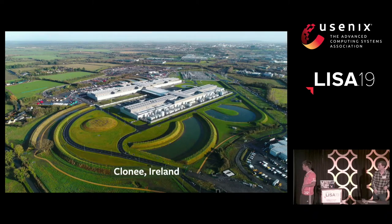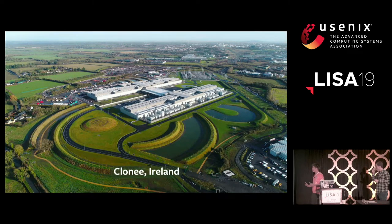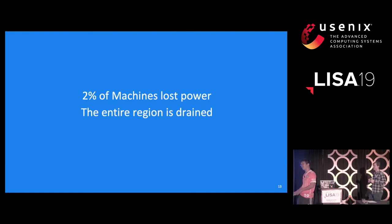Now let's look at what we call sub-region failures, where a part of a region actually fails. This is our data center region in Clonee, Ireland — it's got a few hundred thousand servers in it. One day recently we suffered an outage where a few thousand servers lost power, and we ended up draining the entire region. So we lost 2% of our servers within this huge facility, but we're going to leave the other 98% idle — what's going on?